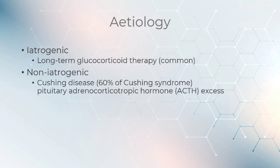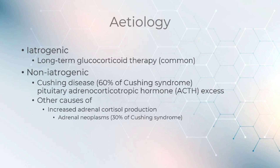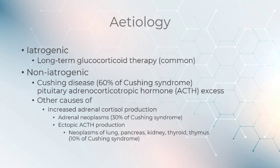As previously mentioned, Cushing's disease presents with pituitary adrenocorticotropic hormone excess. Other causes of increased adrenal cortisol production include adrenal neoplasm and ectopic ACTH production, which can be caused by neoplasms of the lung, pancreas, kidney, thyroid, and thymus.